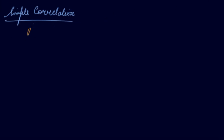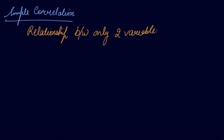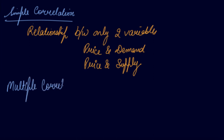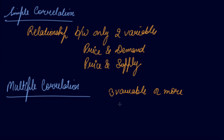Simple correlation studies the relationship between only two variables, such as price and demand, or price and supply. Multiple correlation is when the relationship is studied between three variables or more.